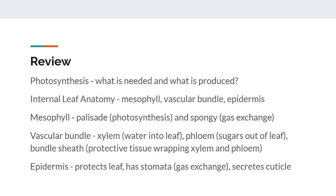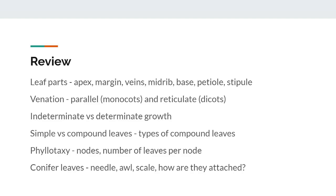This slide mainly focuses on the external anatomy of the leaf. We talked about the various parts of the leaf including the apex, margin, veins, midrib, and base, which are part of the leaf blade, and the petiole and stipule. We talked about the types of venation a leaf can have: parallel in monocots and reticulate in dicots. We talked about indeterminate and determinate growth, and how this makes laminar size a helpful characteristic when identifying trees. We talked about the difference between simple and compound leaves and the various properties and types of compound leaves. We talked about phyllotaxy, or the arrangement of leaves on a stem, and how it corresponds to the number of leaves per node. And last but not least, we talked about conifer leaves and how to make identifying them a little less daunting.